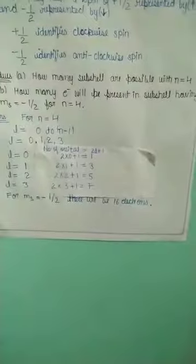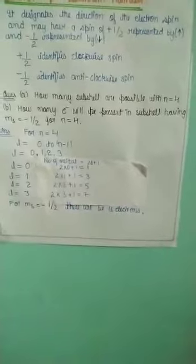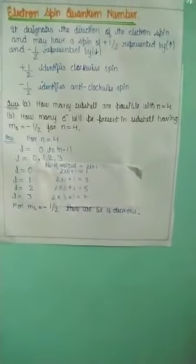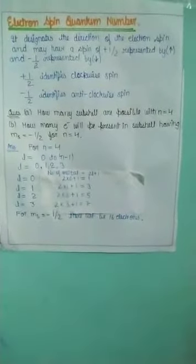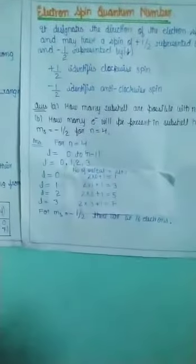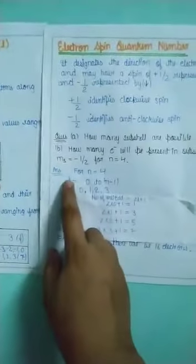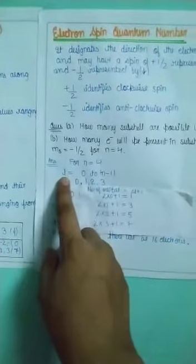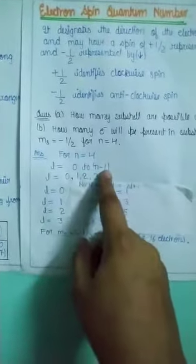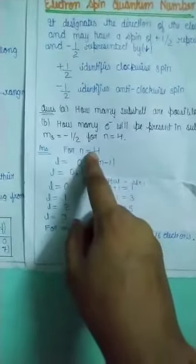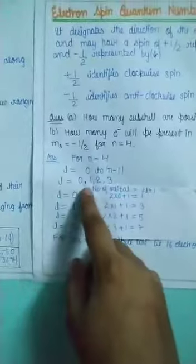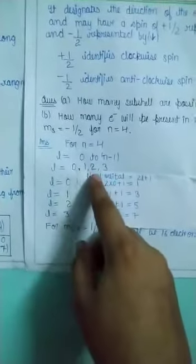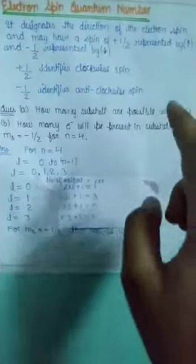Let us see a question: how many subshells are possible with n=4, meaning in the fourth shell, how many subshells are present? We know the range of l is 0 to n-1, and here n=4, so l = 0, 1, 2, 3 — giving a total of 4 subshells present in the fourth shell.